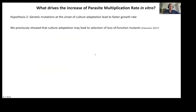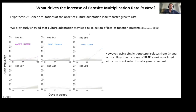Second hypothesis: genetic mutations at the onset of culture adaptation may lead to a faster growth rate. In our previous datasets from the Gambia, we did show that culture adaptation may lead to selection of loss-of-function mutants, however we had not measured the multiplication rate. Here, using single-genotype isolates, we did identify de novo stop-codon mutations in the usual suspects — EPAC and AP2 — and they are increasing in frequency over time, so they are being selected for. However, they are not sufficient to explain the increase of parasite multiplication rate in all isolates, so the question remains open.